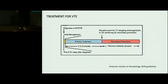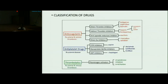Coming to management of thrombosis, it can be divided into three stages: an initial management phase lasting 5 to 21 days, a primary treatment phase lasting 3 to 6 months, and a secondary prevention phase. Drug classification includes anticoagulants, antiplatelet drugs, and thrombolytics. Anticoagulants are mostly used in venous thrombosis, whereas antiplatelet drugs are mainly used in arterial thrombosis.